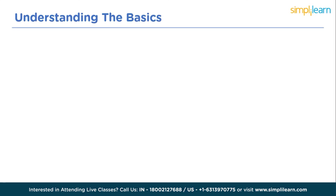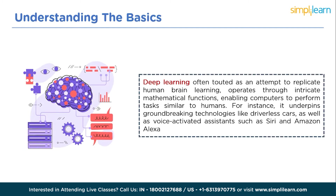First, we will understand the basics — starting with what is deep learning. Deep learning, often touted as an attempt to replicate human brain learning, operates through intricate mathematical functions, enabling computers to perform tasks similar to humans. For instance, it underpins groundbreaking technologies like driverless cars as well as voice-activated assistants such as Siri and Amazon Alexa. In practice, deep learning empowers computers to learn directly from various data formats such as images, text, or audio.